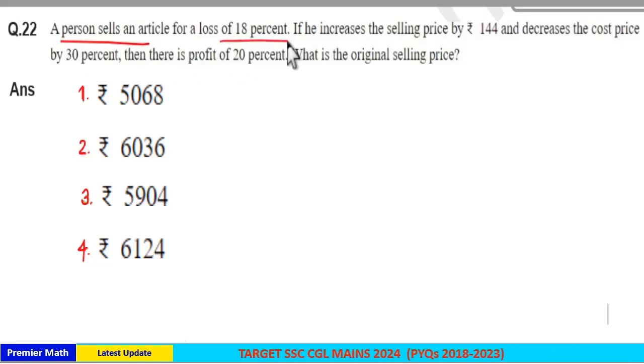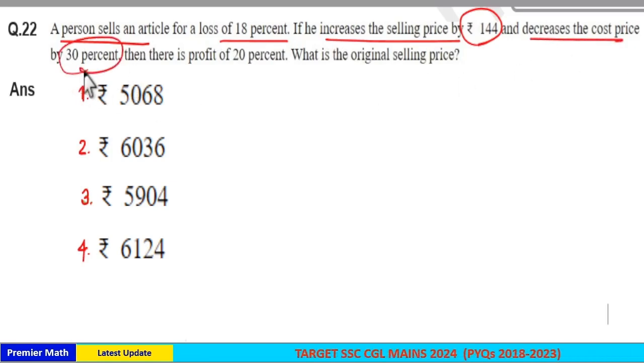A person sells an article for a loss of 18%. If he increases the selling price by Rs. 144 and decreases the cost price by 30%, then there is a profit of 20%. What is the original selling price?